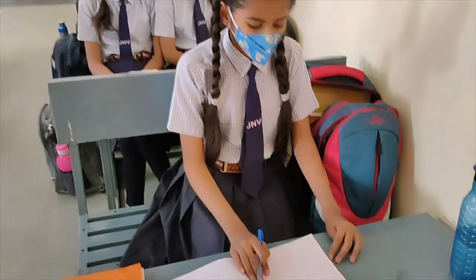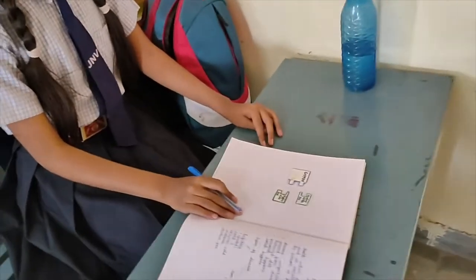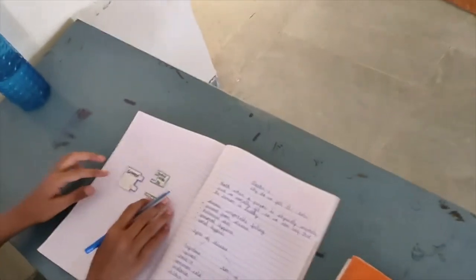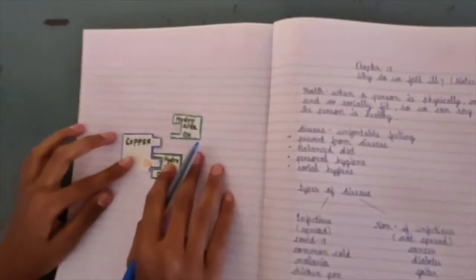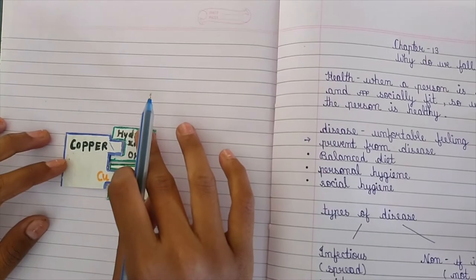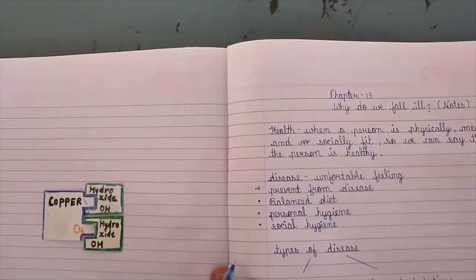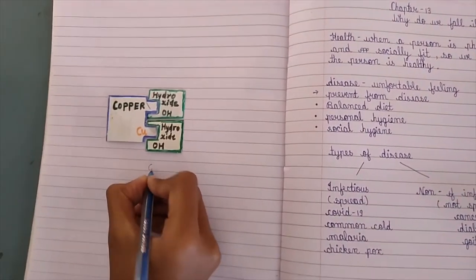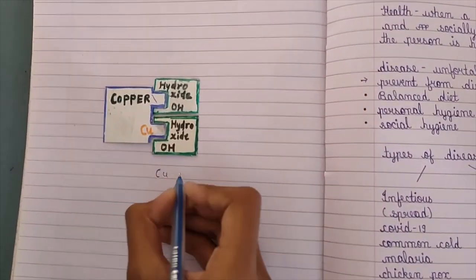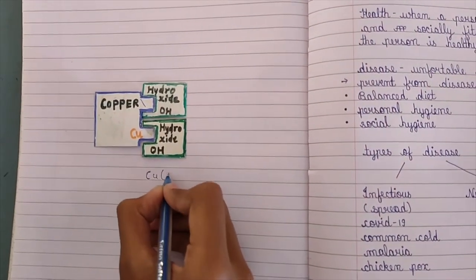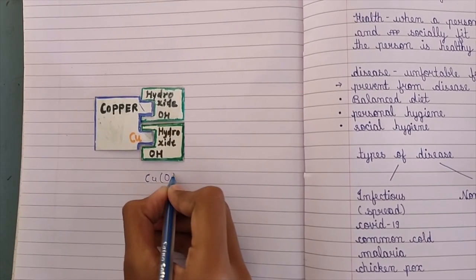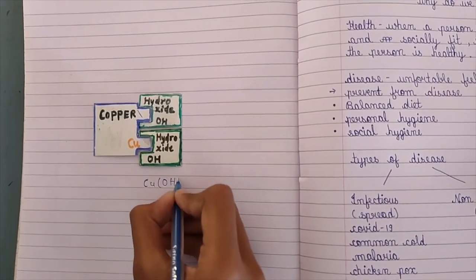Copper has two positive charge, and each hydroxide has one negative charge. Now we join them. So we make copper hydroxide and we make the formula: copper Cu and hydroxide twice.